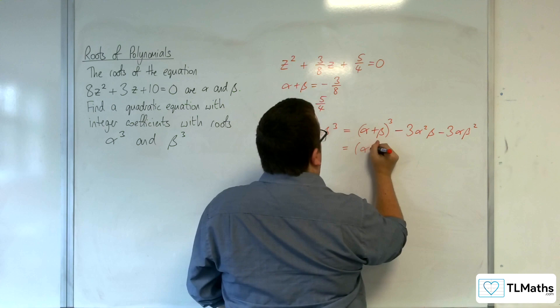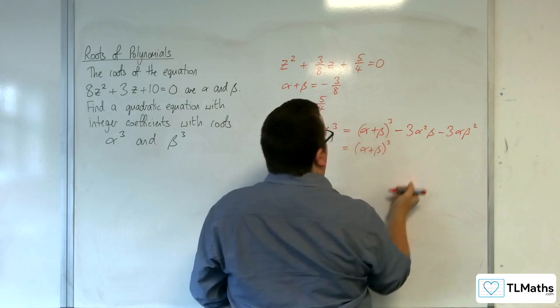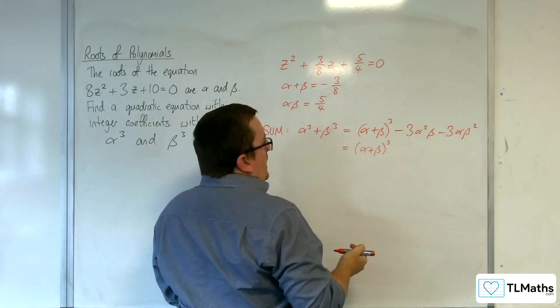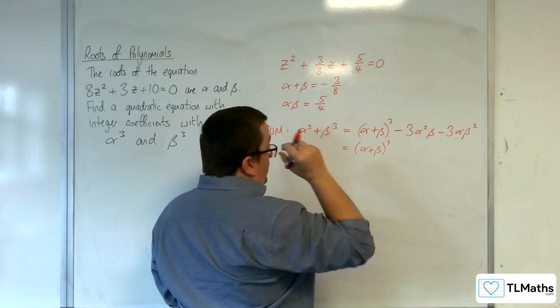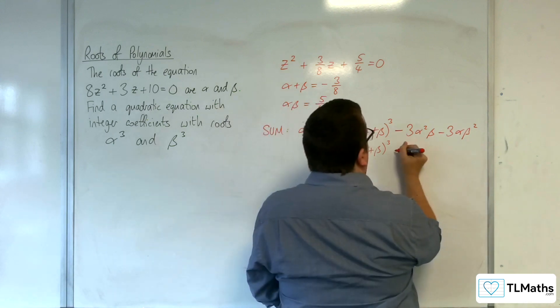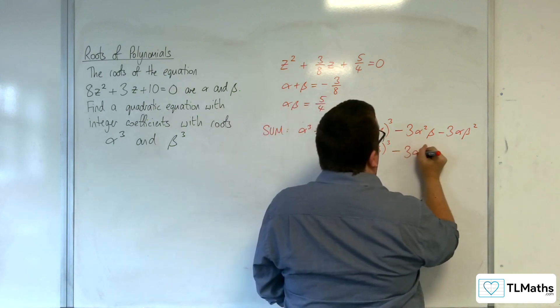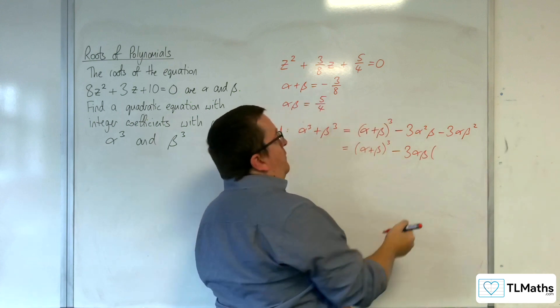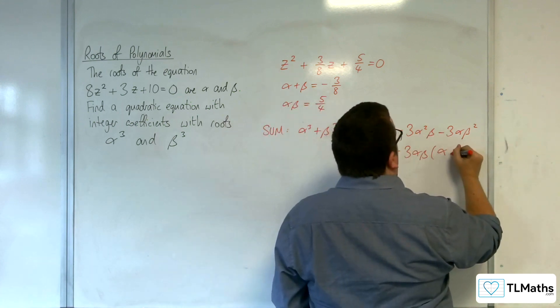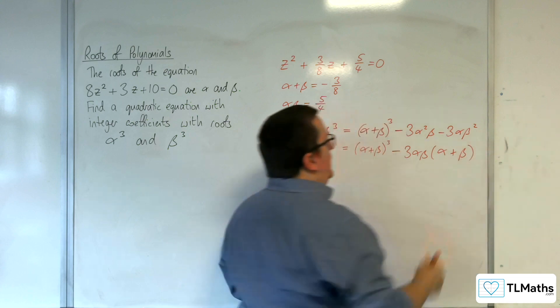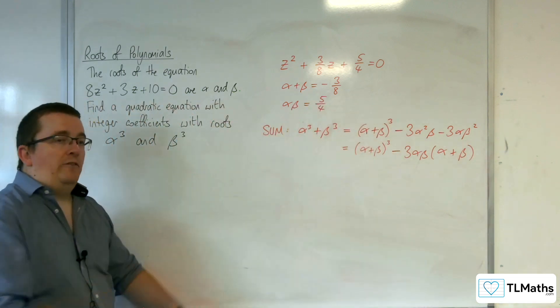Now with these terms, it would be useful if I could factorize this. I've got 3α²β + 3αβ², which is 3αβ times (α + β).